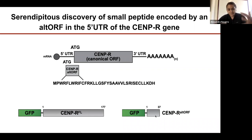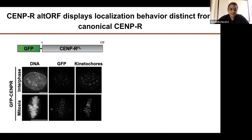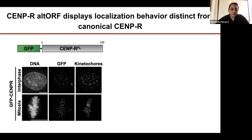The first step was to ask: do these localize to the same place? Could there be some differential localization or function? So we tagged each protein with a fluorescent protein and imaged them in the cell to see where they localized. First, I'll show you the behavior of the full-length SEMP-R protein — here you can see the DNA and here the GFP signal showing its localization.